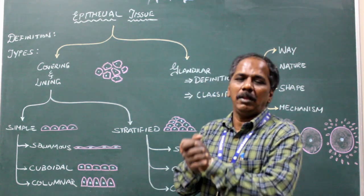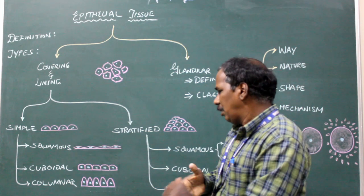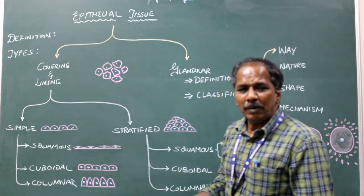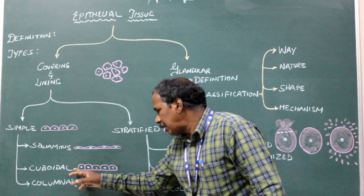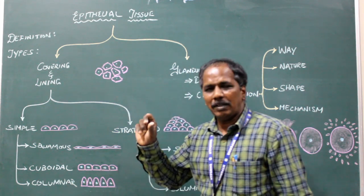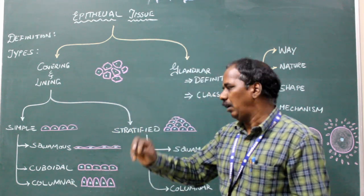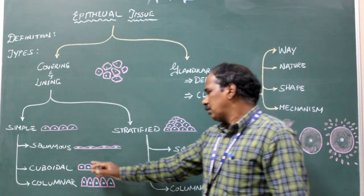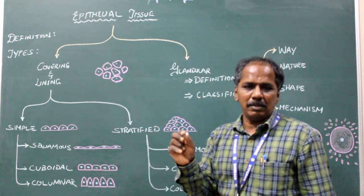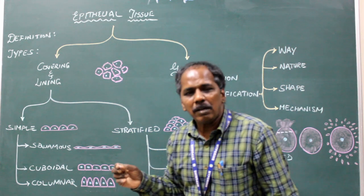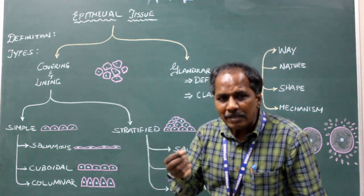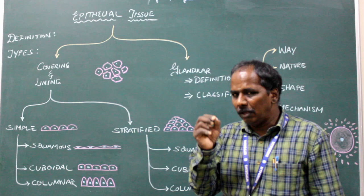Simple cuboidal epithelium: the cells are cuboidal in nature, meaning the height and the breadth are equal. It consists of a single layer of cuboidal cells. Examples: follicles of the thyroid gland and the surface epithelium of the ovary.